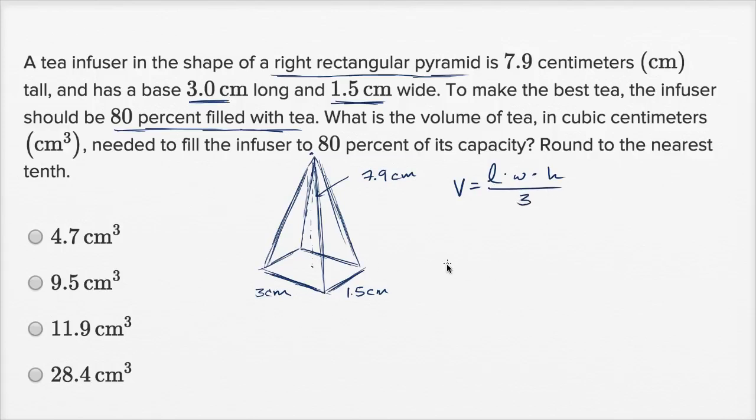So in this case, and just another way of thinking about it, the length times the width, that's the area of this base. And then you multiply it times the height, and then you divide by three. You would get the volume of the cube—or not the cube, I should say the rectangular prism. It's not a cube, all the dimensions aren't the same—that would contain this thing. But we're not concerned about the volume of the rectangular prism, we are concerned with the volume of the right rectangular pyramid.